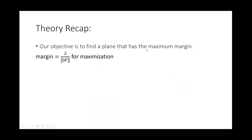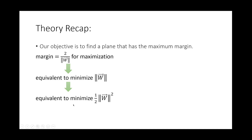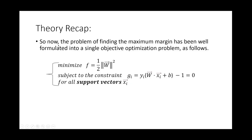Our objective is to find the hyperplane that has the maximum margin. The margin equals 2 divided by the magnitude of w, and we want to maximize it — which is equivalent to minimizing the denominator, the magnitude of w. This is also equivalent to minimizing one-half times the magnitude of w squared. The reason we choose one-half and the square is just for mathematical convenience.